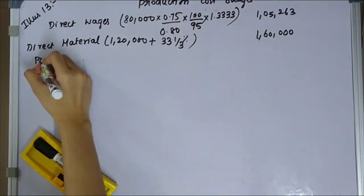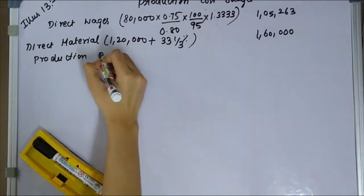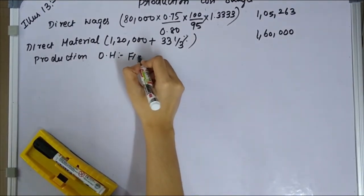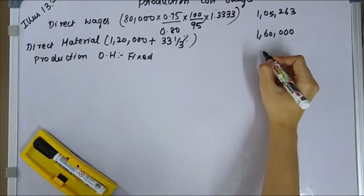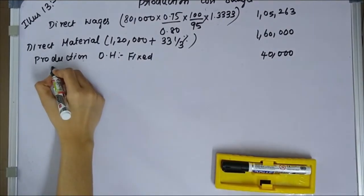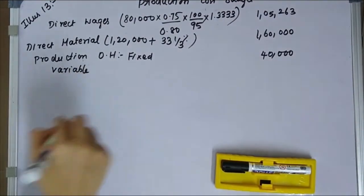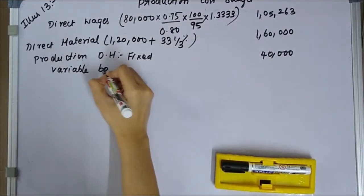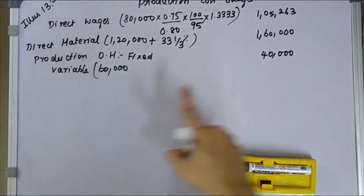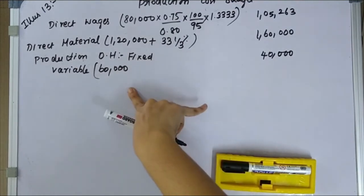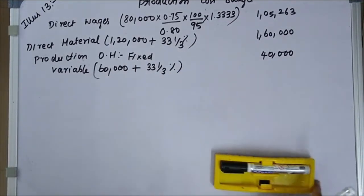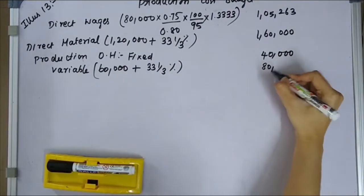Next, production overhead. Fixed overhead — we know it is constant, so as per the question it remains 40,000 in the upcoming year. Variable overhead is 60,000. Since production increases by 33⅓%, the variable overhead is impacted and increases to 80,000.